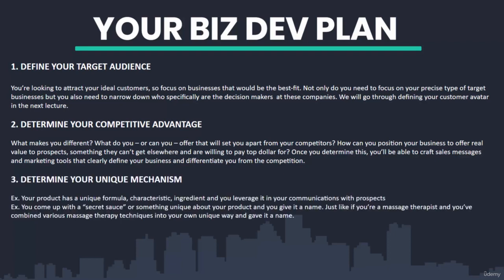Number three: determine your unique mechanism. The difference between a unique competitive advantage and a unique mechanism is that with the unique mechanism, your product or service has a unique formula, characteristic, or ingredient that you leverage in your communication with your prospect. You come up with the secret sauce or something unique about your product, give it a name — like your five-step formula for accomplishing X, or your three-step process for accomplishing Y.